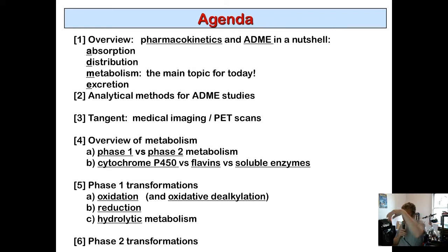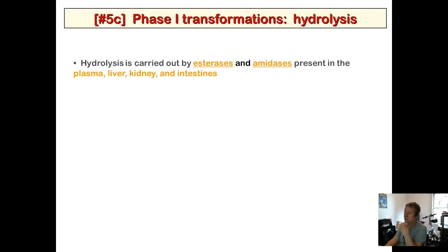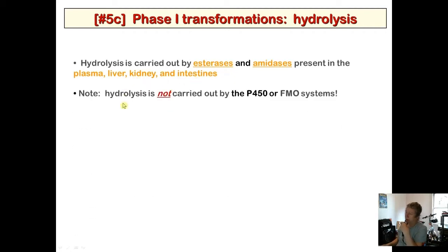Now we cover hydrolytic metabolism — hydrolysis of functional groups. Hydrolysis is carried out by esterases and amidases. These are soluble enzymes, not related to P450 or FMO, present in the plasma, blood, liver, kidney, and intestines.